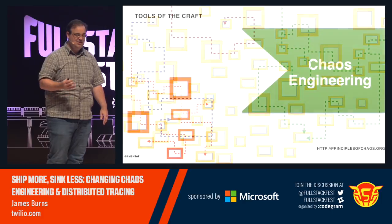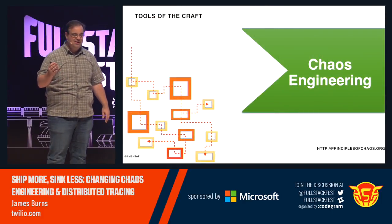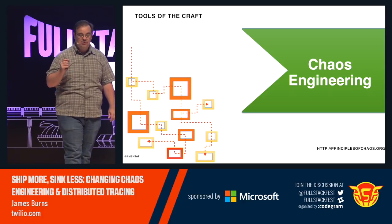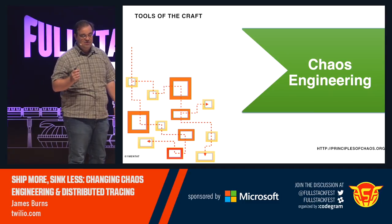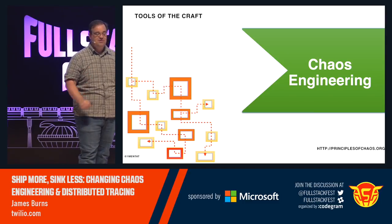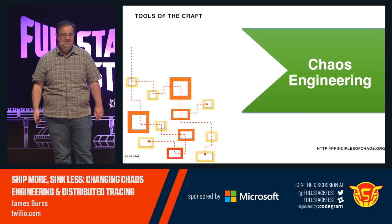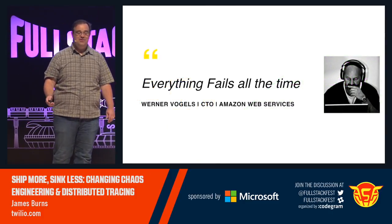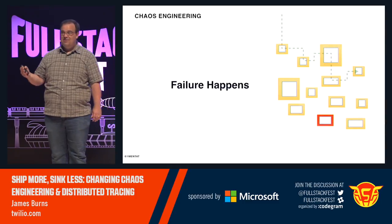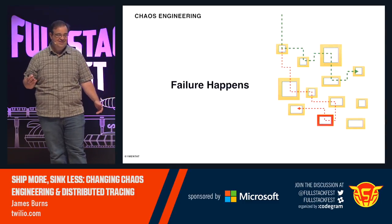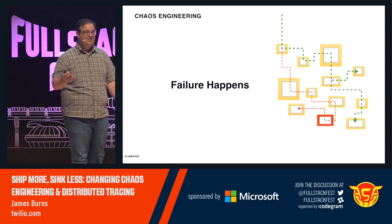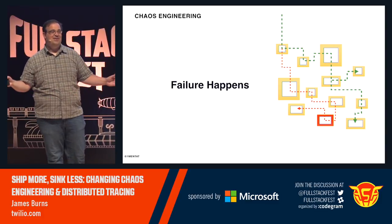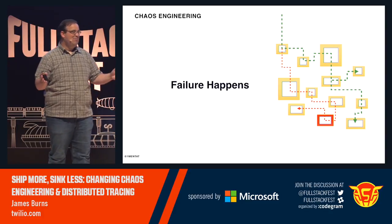The other tool is chaos engineering. Principles of Chaos states it's the discipline of experimenting on a distributed system to build confidence in the system's capability to withstand turbulent conditions in production. In other words, we break things on purpose. To quote Werner Vogels, CTO of Amazon Web Services: everything fails all the time. Hardware fails, networks partition, bad software deploys, SaaS fails, and human error — people click the wrong button, enter the wrong number, and suddenly you've taken down all of S3.